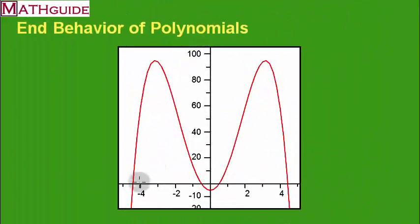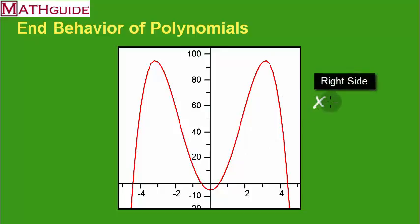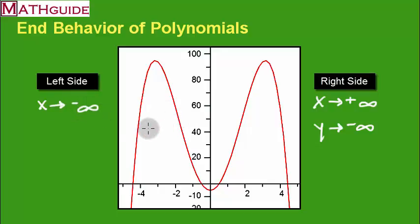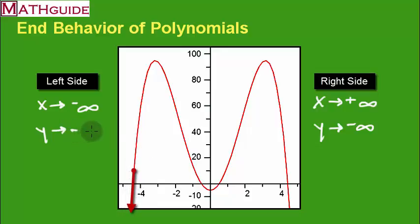Here's the last example. We've got a shape here that looks like an M. On the right side, x is going right forever — positive infinity. Tracing your finger along the curve, y is going down forever — negative infinity. On the left side, x is always going to negative infinity. And as we trace our finger going farther left, the curve is going down forever — so we put negative infinity for y as well.